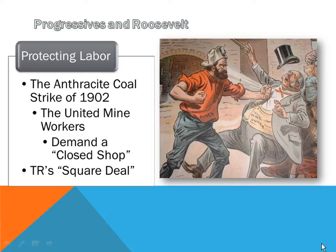Eventually September rolls around and it starts getting cold. In 1902, the majority of houses in the United States were heated by coal — very dense, long-burning anthracite coal. People start worrying that there won't be enough coal to make it through the winter. Theodore Roosevelt decides he's had enough and is going to get involved.